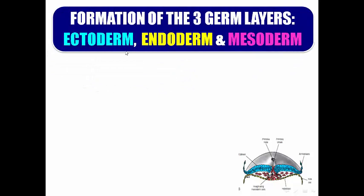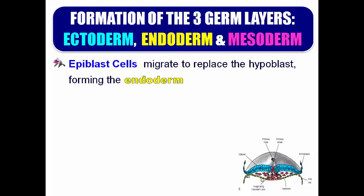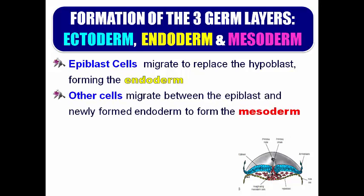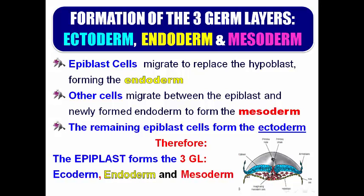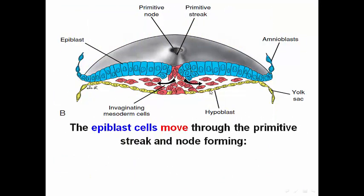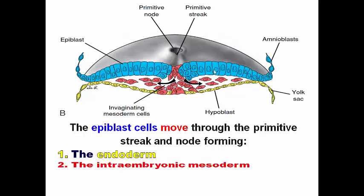The formation of the three germ layers — ectoderm, endoderm, and mesoderm — all form from the epiblast. Some cells migrate to replace the hypoblast and form endoderm. Other cells (the red ones) migrate between the epiblast and endoderm to form mesoderm. The remaining cells form ectoderm.